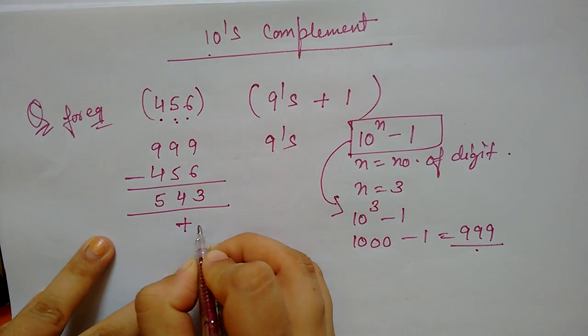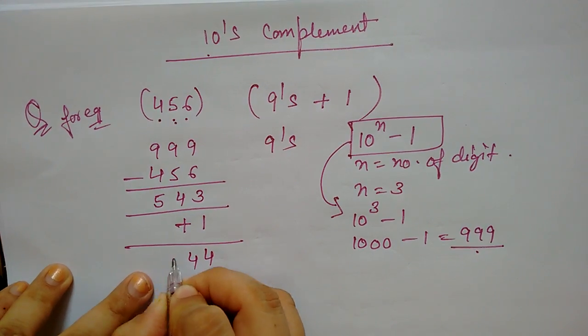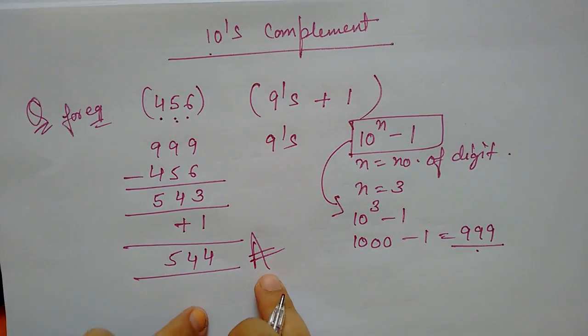So, what will you add to this number? What will you add to this number? 1. So, add 4, 4, 5. So, this is your result. Final answer.